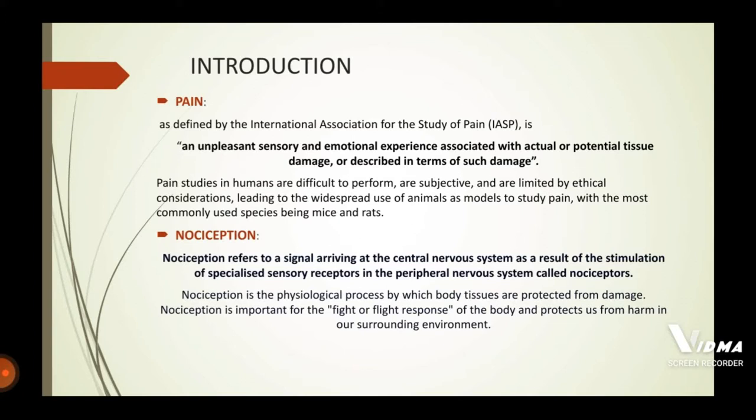Usually animals — most commonly mice and rats — are used in pain studies. Nociception refers to a signal arriving at the CNS as a result of stimulation of specialized sensory receptors in the peripheral nervous system called nociceptors. In short, nociception is a physiological definition of pain.